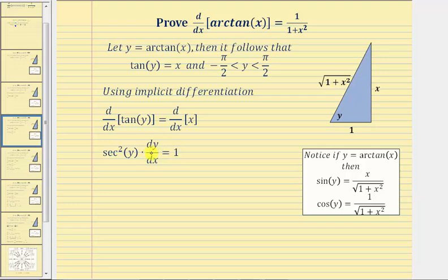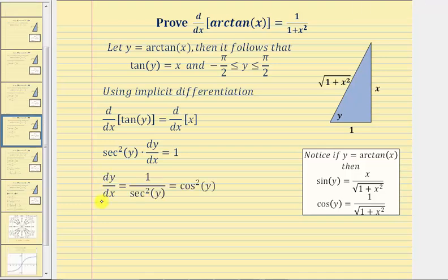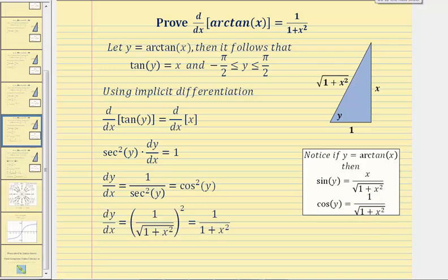Solving for dy/dx, we divide both sides by secant squared y, giving us dy/dx equals one divided by secant squared y. Since one over secant y equals cosine y, one over secant squared y equals cosine squared y. We already know cosine y equals one divided by the square root of the quantity one plus x squared, so dy/dx equals one divided by the quantity one plus x squared.